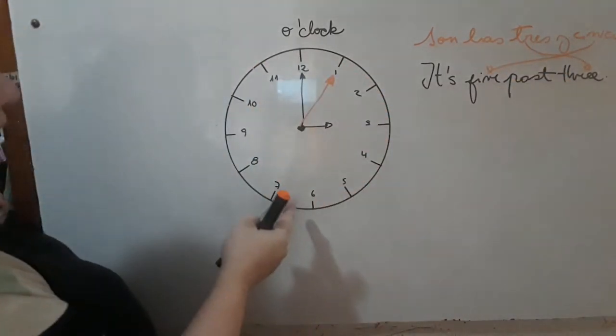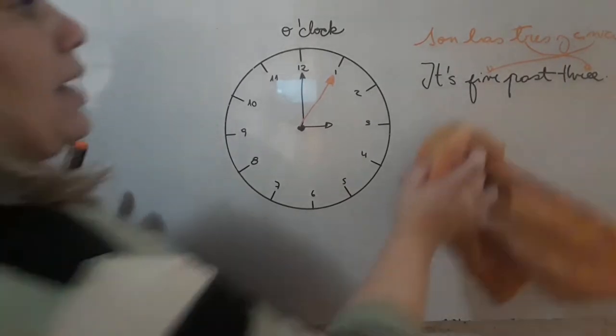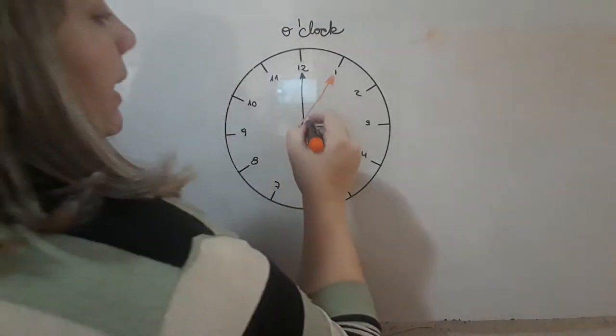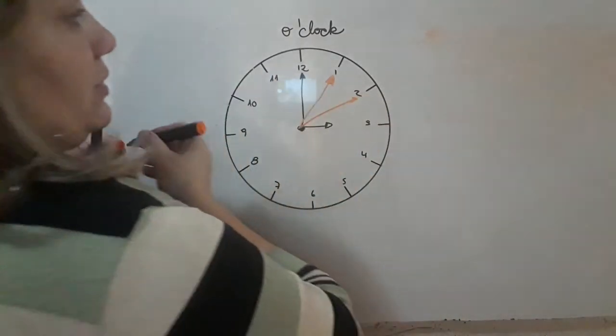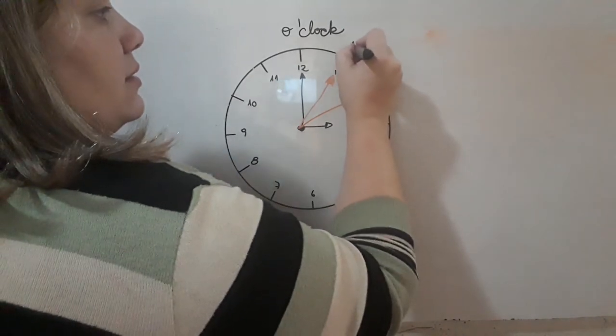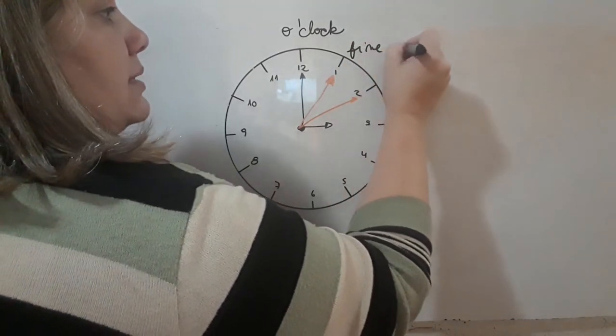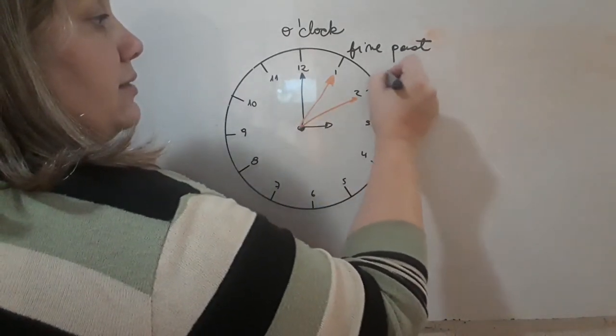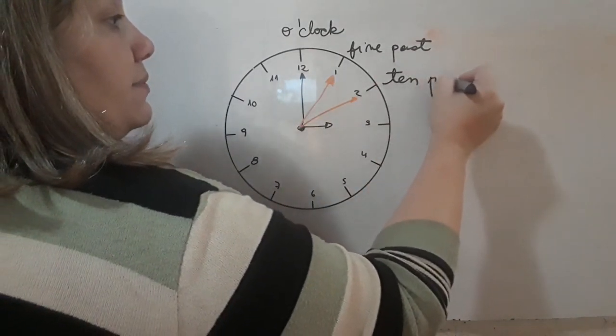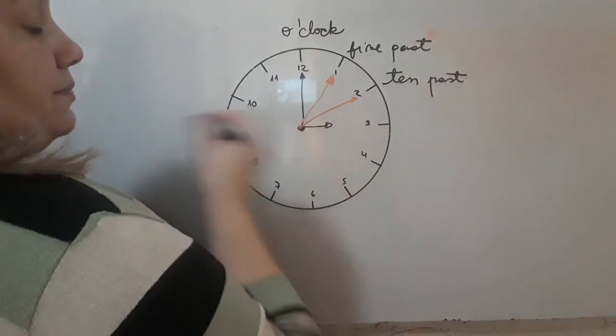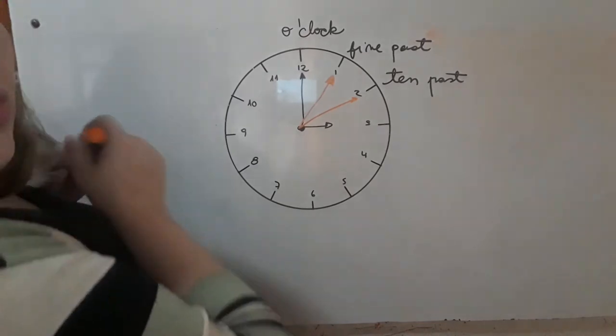Y de aquí a aquí siempre va a ser igual. Entonces, hagámoslo rápido. So, acá pasaron diez minutos. Entonces, en vez de cinco minutos pasadas las tres, five past, van a ser ten past three. Y acaba de decir, it is, este va a ser dos colores, chicos.